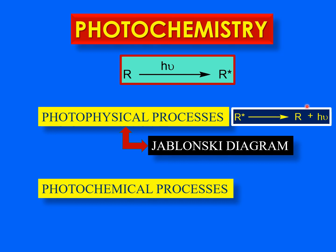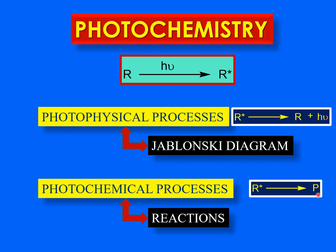The second type of processes that excited molecules may undergo are the photochemical processes. During these photochemical processes, the excited molecule undergoes some reactions to convert to products. These processes are explained with the help of photochemical reactions, but this is not our concern today. We will be only talking about the Jablonski diagram — in other words, the photophysical processes that an excited molecule undergoes to come down to the ground state.